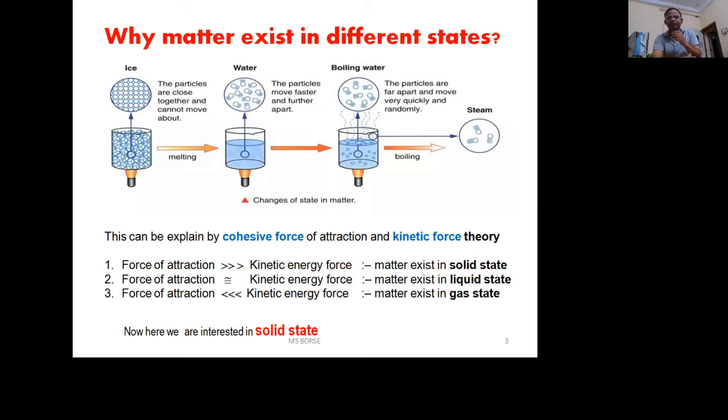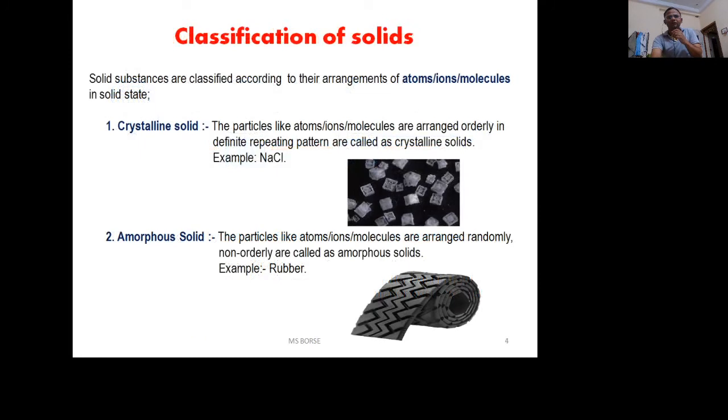Next topic is classification of solids: crystalline solid and amorphous solid. When particular atoms are arranged in an orderly definite arrangement, it's called crystalline solid, for example NaCl. The second type is amorphous solid, where particle atoms are arranged randomly or non-orderly, for example rubber.